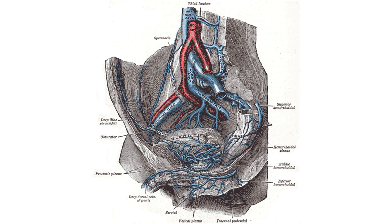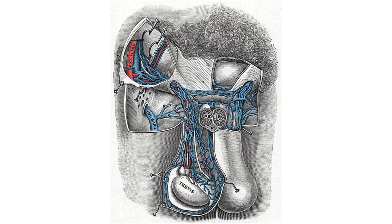Two or three of these accompany the ductus deferens and supply the epididymis, anastomosing with the artery of the ductus deferens. Others pierce the back part of the tunica albuginea and supply the substance of the testis. The internal spermatic artery supplies one or two small branches to the ureter, and in the inguinal canal gives one or two twigs to the cremaster.